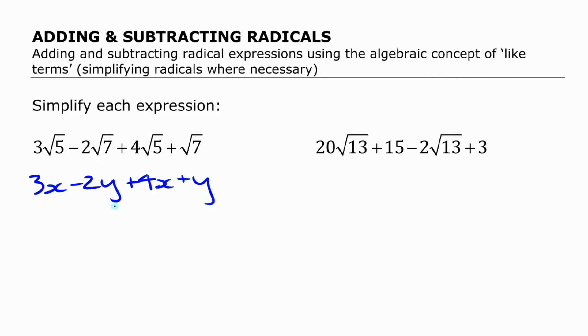Because no matter what this number is, it's the same number, and if you have minus two of them and plus one of them, you can combine that together and make minus one of them. And if you have three of these x's and four more of them, all together you have seven times that number.